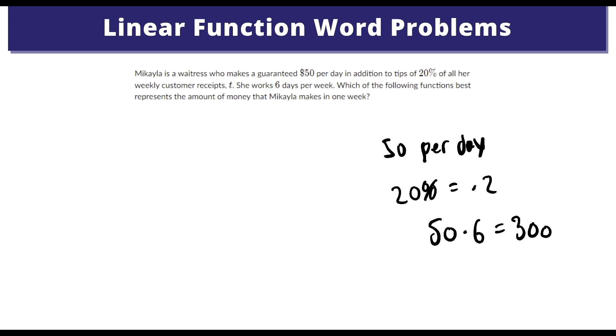So that would give us, let's say, the function F(T), which represents how much she would make in one week, is equal to 300, which she is bound to get, and then we're going to do plus 0.2T. And T represents the amount of customer receipts she has or how much is on those customer receipts. And then you'd add them all up and you'd find it.